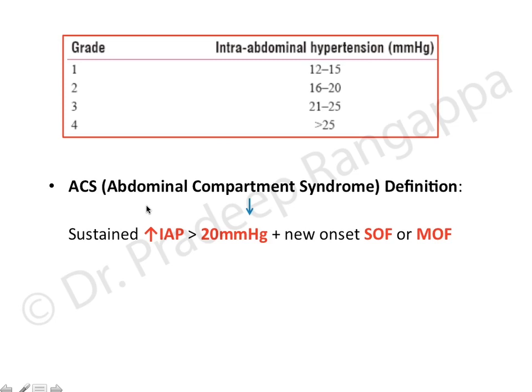For a diagnosis of abdominal compartment syndrome, the patient must have a sustained increase in intra-abdominal pressure more than 20 mmHg along with new onset single organ failure or multi-organ failure — for example, developing hypotension, rising peak airway pressure with respiratory deterioration, or neurological deterioration. Any new organ failure in that setting constitutes abdominal compartment syndrome.